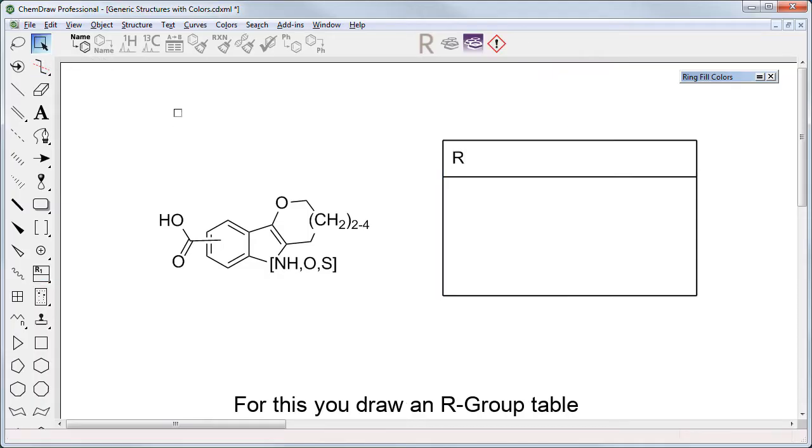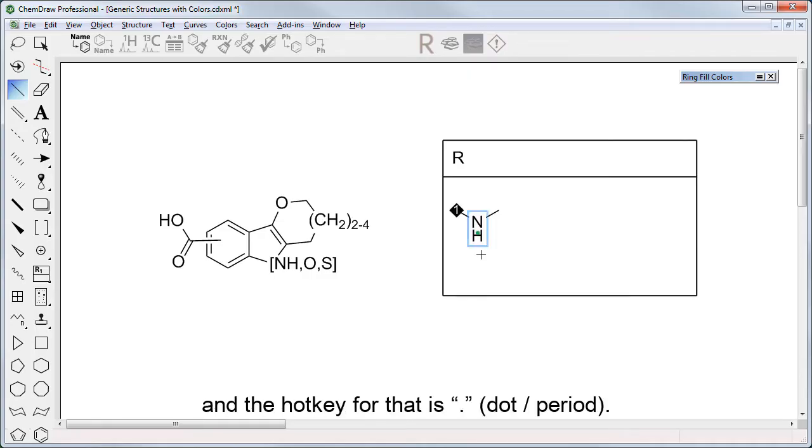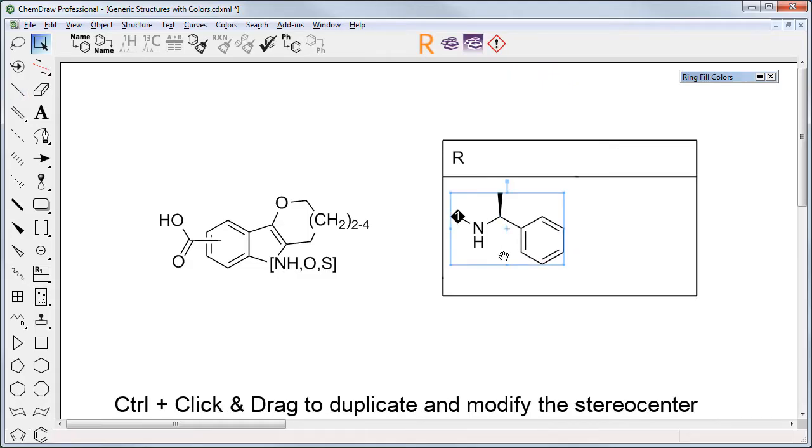For this, you draw an R group table in which you draw the various fragments. You define a connection point, and the hotkey for that is dot or period, then draw the molecules, select them, Ctrl-click and drag to duplicate, and modify the stereo center.